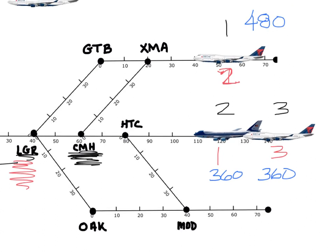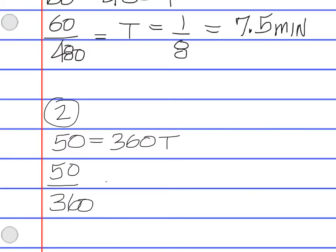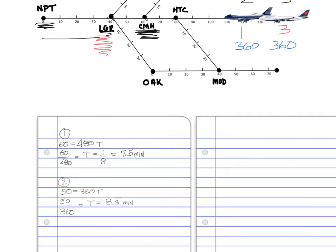Now let's go to plane number two. Plane number two has a speed of 360, and its distance from where it's at now to CMH is 50. We don't know the time. For plane number two: distance of 50 equals 360 times t. Solving that — 50 divided by 360, then multiply by 60 to convert to minutes — gives us 8.3 repeating minutes. So we have seven and a half minutes for plane one and eight and a third minutes for plane two.